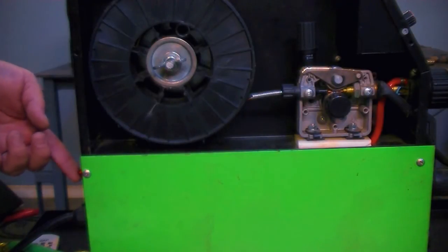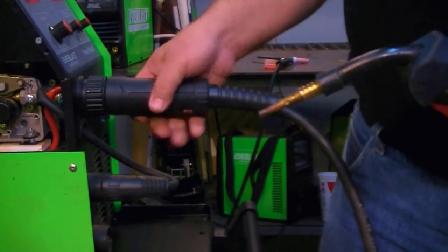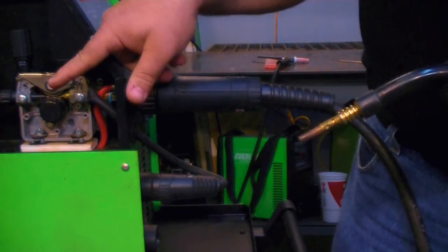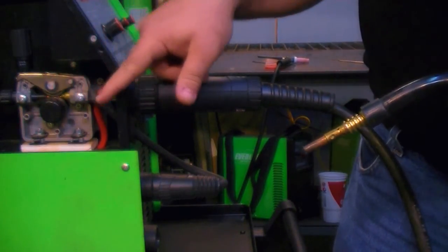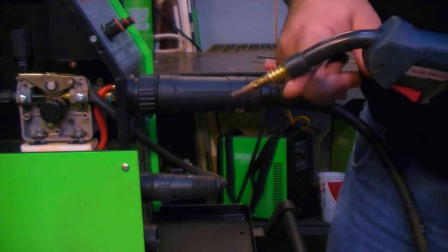The next step is to turn the welder on. If you have gas connected, leave it off at this moment because you don't want to waste gas while you're trying to feed the wire out the end of the gun.